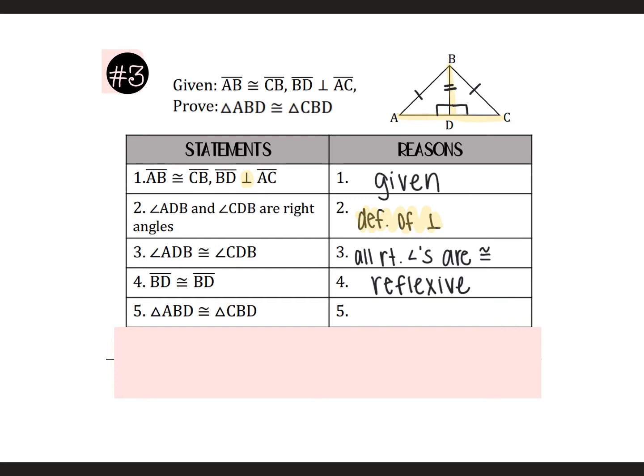And now the two triangles are congruent because of HL. We have a right angle, across from it is the hypotenuse, and then we have one other leg marked. So that is HL.